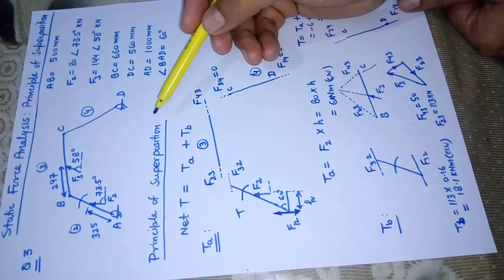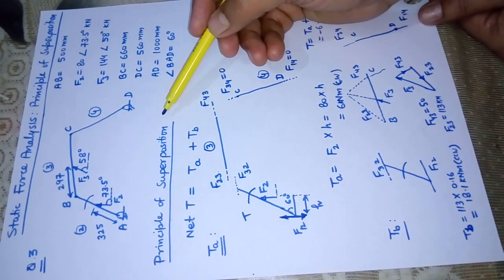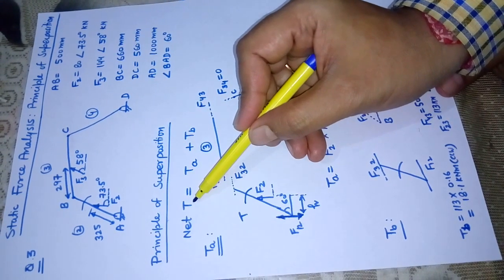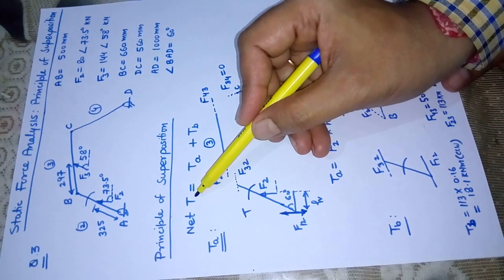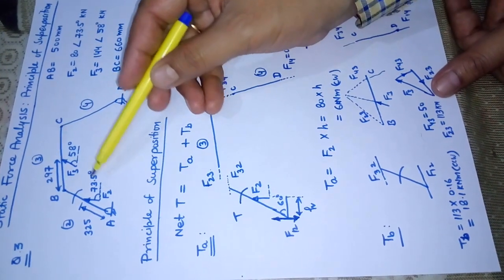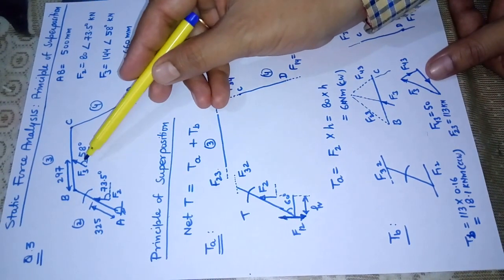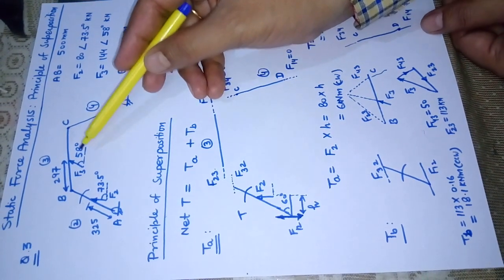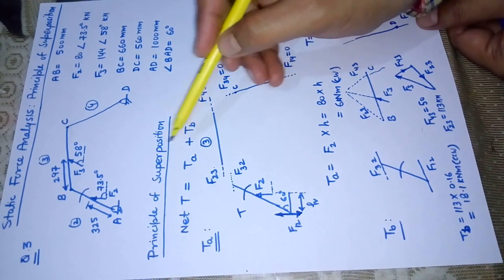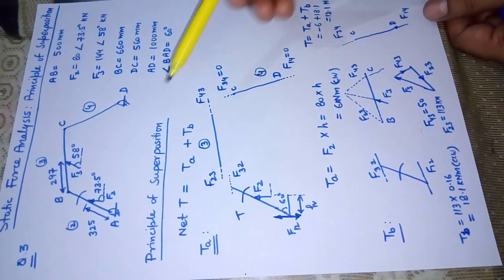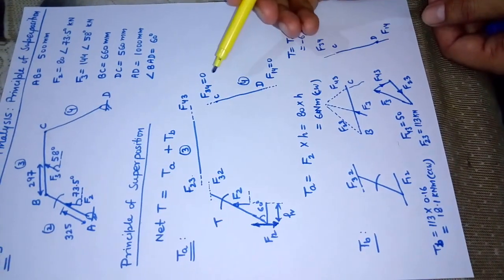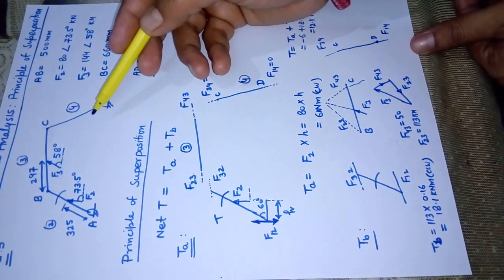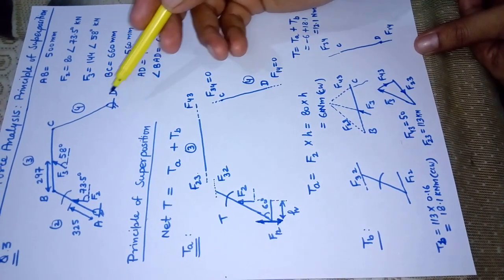As per the principle of superposition, to get the total torque, we first assume F2 is acting and F3 is zero, then we assume F3 is acting and F2 is zero. We find the net effect by adding all the torques due to either F2 or F3 algebraically. So essentially we divide this problem into two steps — one for each force. If there were three forces, we would require three steps.